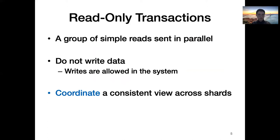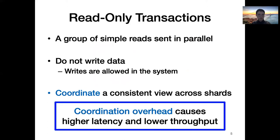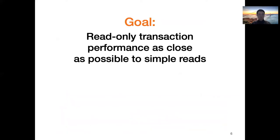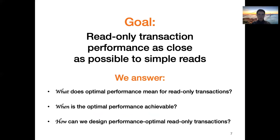Read-only transactions coordinate a consistent view across shards. However, this coordination normally comes with overhead and makes read-only transactions have higher latency and lower throughput than simple reads. Since real workloads are dominated by reads, it is crucial to minimize the coordination overhead incurred by read-only transactions. The goal of this work is to make read-only transactions have the best possible performance, meaning performance as close as possible to simple reads. To achieve this goal, we answer three questions: what properties precisely capture optimal performance, when is it possible to achieve optimal performance, and how can we design performance-optimal read-only transactions?